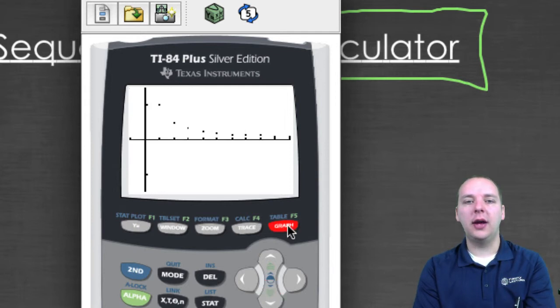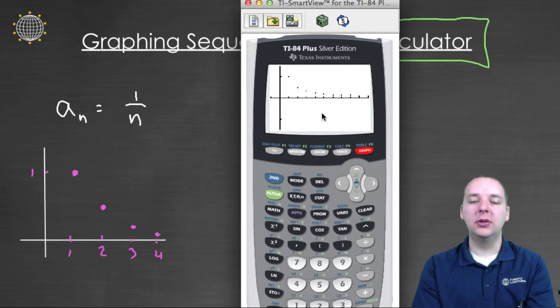But nevertheless, when we go to graph it, I hope you can see this on my screen here. You get one, a half, a third, a fourth, a fifth, a sixth, etc. This graph looks the same as the graph that we did by hand.